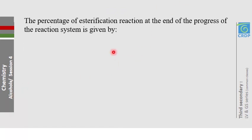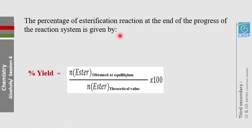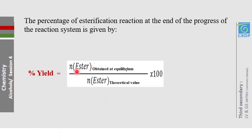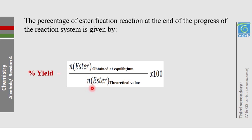The percentage yield of the esterification reaction is calculated as: percentage yield = (moles of ester actually produced at equilibrium) / (theoretical moles of ester) × 100. The theoretical amount is the amount that would be produced if the reaction were perfectly complete; it is found using stoichiometric ratios from the limiting reactant.